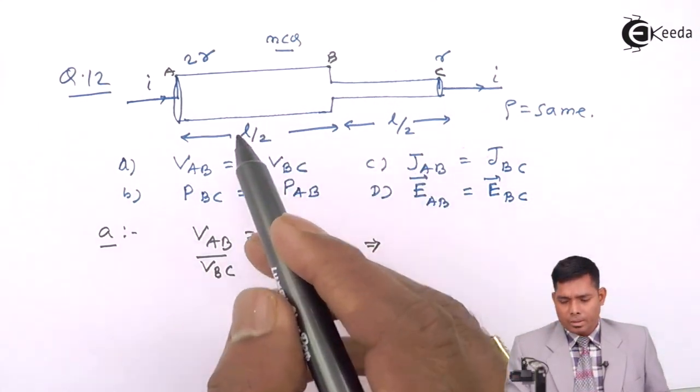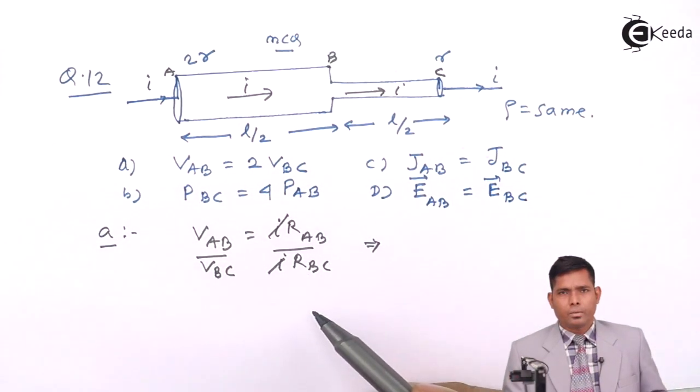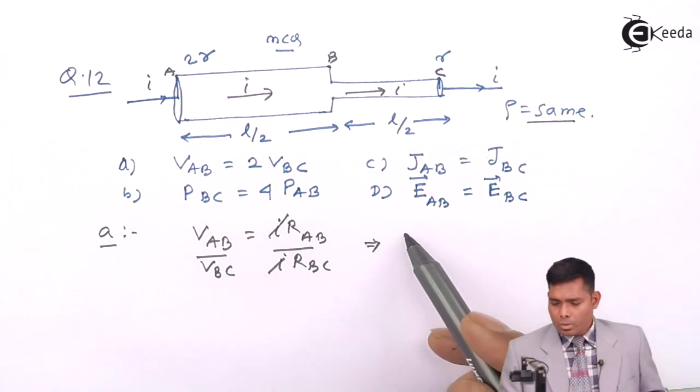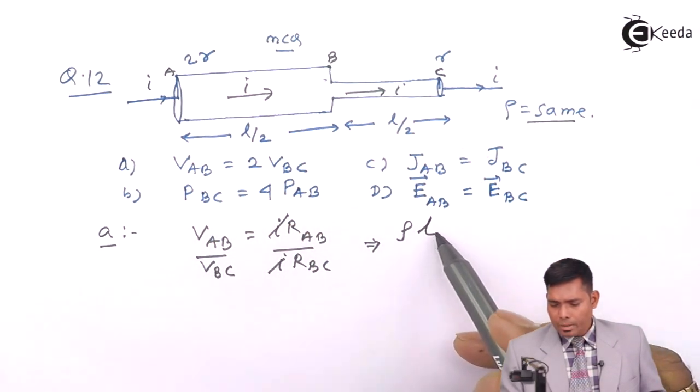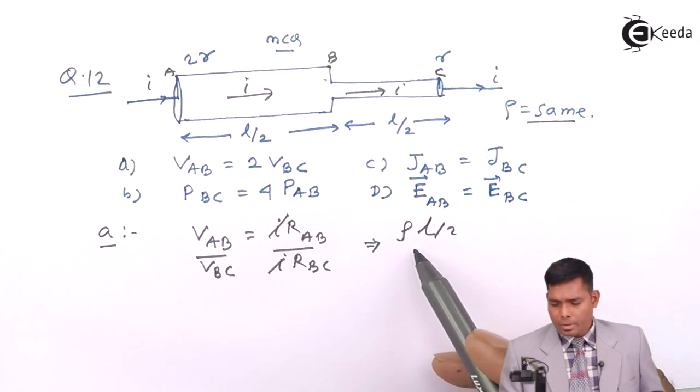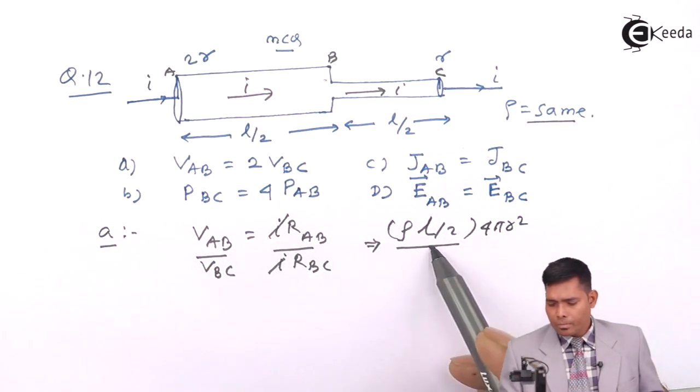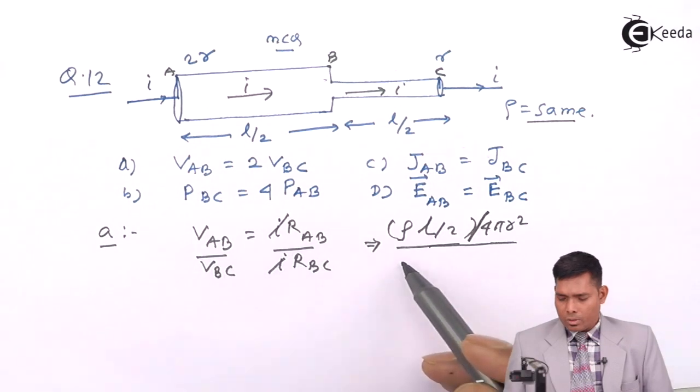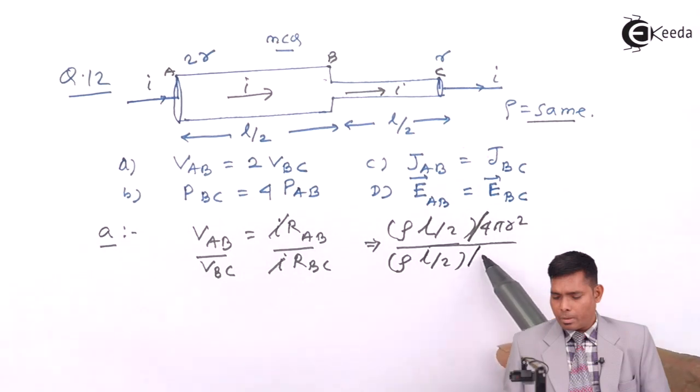I is same in both cases because the current going here is also I, so that cancels out. RAB over RBC - R is ρL/A, so ρ is same because same material. ρL, L means the length of this part, L/2, that is same. By A, A is πr², that is π times the square, this is 4πr². So ρL/A. Similarly for this, ρL/A, but here the area is πr² only, divided by πr².